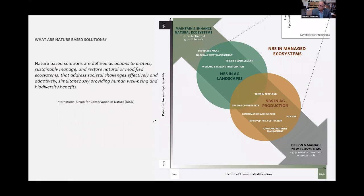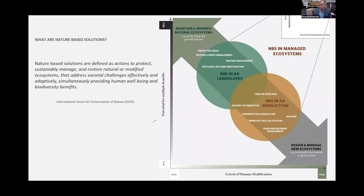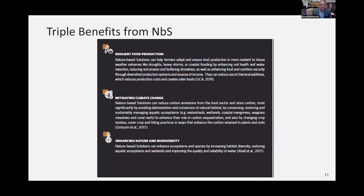If you zoom in on those managed systems, you can look at the space where you can implement nature-based solutions. In the study we did with FAO, we looked at NBS in two big compartments: nature-based solutions in agricultural landscapes — NBS implemented in landscapes used to produce food currently — and NBS in agricultural production, meaning in the food-producing systems themselves: farmers, industry that produces food. We tried to survey and assess how this all adds up. You can get at least a triple benefit from NBS based on our review of case studies, literature, and analysis of investments and gaps.